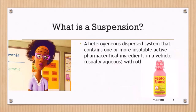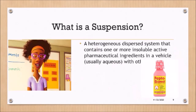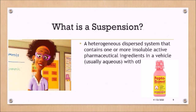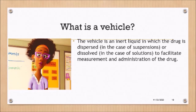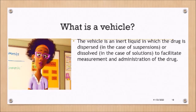Formally, a suspension is a heterogeneous dispersed system containing one or more insoluble active ingredients in a vehicle, which is usually water or other vehicles such as oils and alcohols. Pepto-Bismol is a well-known example of a suspension, used as an anti-diarrheal. In a solution, by contrast, the particles are not suspended — solutes are dissolved — which facilitates measurement and handling of a dose by the patient.